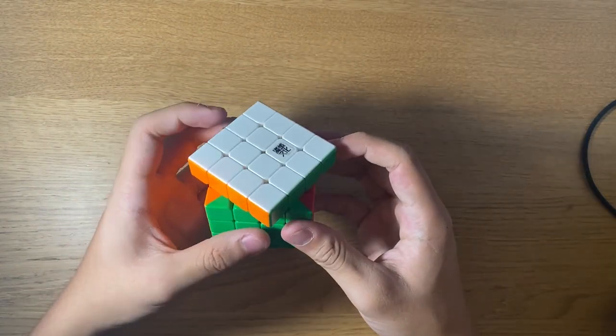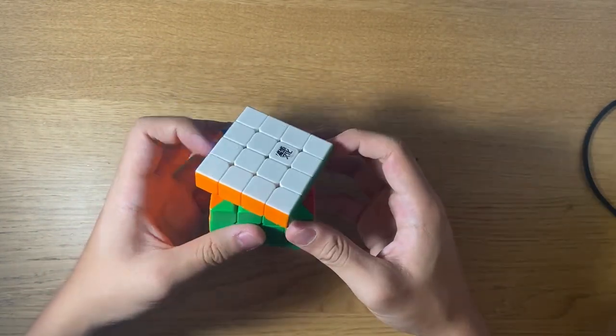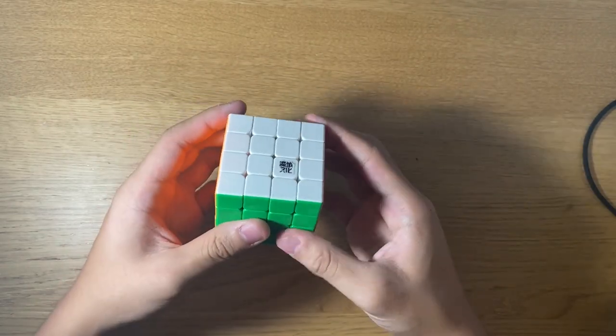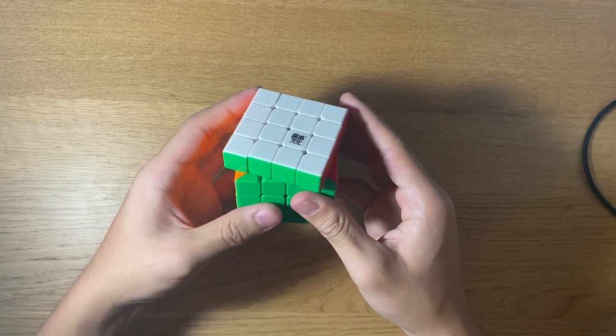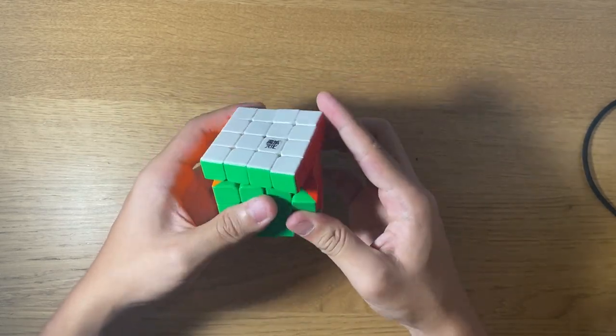As for the corner cutting, the cube can corner cut well above 45 degrees for the outer layers, and about a cubie for the inner layers. And the reverse corner cutting is half a cubie for both inner and outer layers.